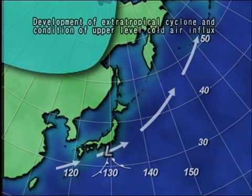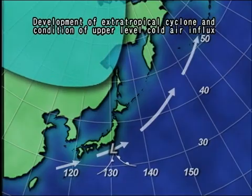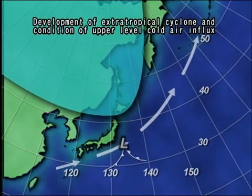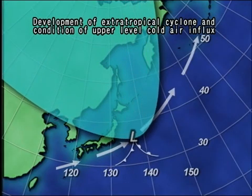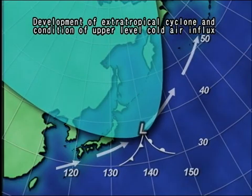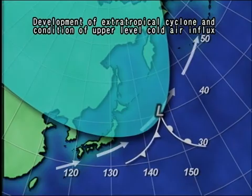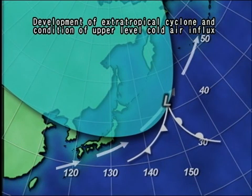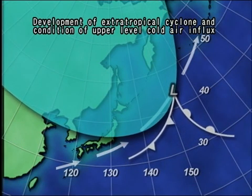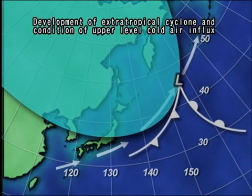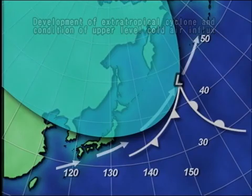We also need to keep an eye on the movements of upper-level isotherms, because movements of upper-level cold air towards the south may cause extra-tropical cyclones to develop associated with gusts. Special attention should be paid to the movements of isotherms of 500 hectopascals upper-level charts at minus 30 degrees centigrade and minus 36 degrees centigrade in winter, and minus 24 degrees centigrade in spring and autumn.